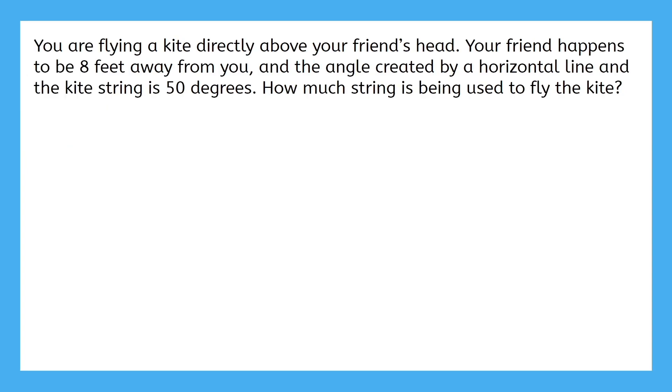Our second example says you are flying a kite directly above your friend's head. Your friend happens to be 8 feet away from you. The angle created by a horizontal line and the kite string is 50 degrees. How much string is being used to fly the kite?